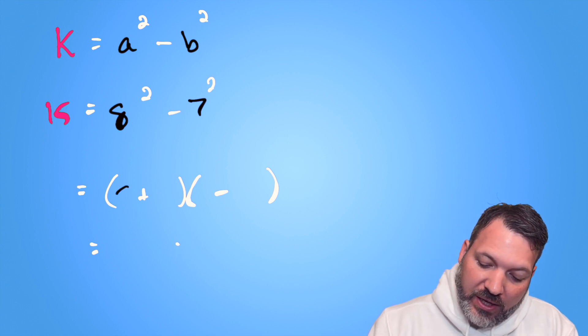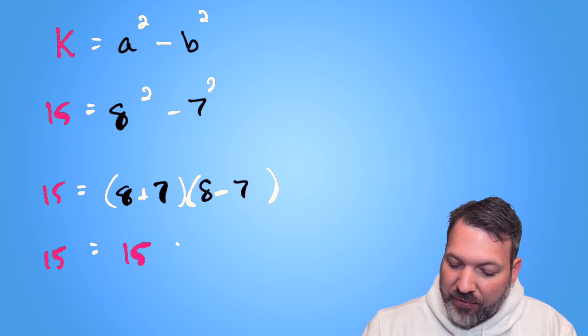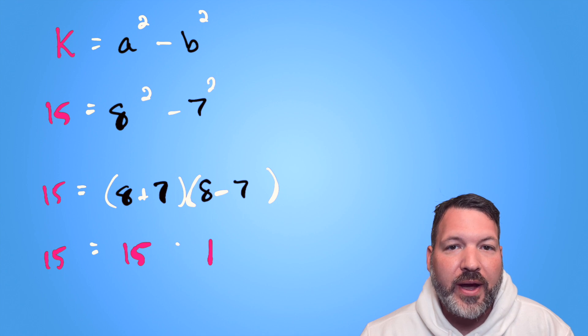And so we can write 15 as the product of eight plus seven times eight minus seven. Eight plus seven, of course, is 15. Eight minus seven is one. And once again, we have our trivial factorization. 15 is the same as 15 times one.